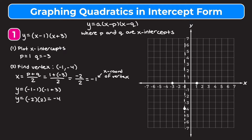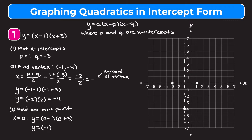In case you need five points, we'll find one more point and then reflect it across the axis of symmetry. I'm going to plug in x equals zero because it's an easy number. So y equals zero minus one times zero plus three. Zero minus one is negative one, zero plus three is three, negative one times three is negative three. So we have the point zero, comma, negative three. We reflect that across the axis of symmetry to also get the point negative two, comma, negative three, and then draw in our parabola.